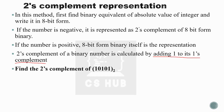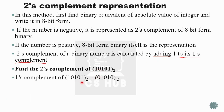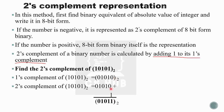Let's find the two's complement of the number 10101. First, find the one's complement of 10101, which gives 01010. Then add 1: 01010 plus 1 equals 01011. So the two's complement of 10101 is 01011.